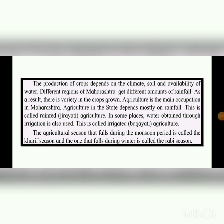Agriculture in Maharashtra depends on rainfall, called rain-fed or jiharati agriculture. Crops grown through irrigation are called bagayati agriculture. Agriculture during the monsoon or rainy season is called the kharif season, and agriculture during the winter season is called the rabi season.